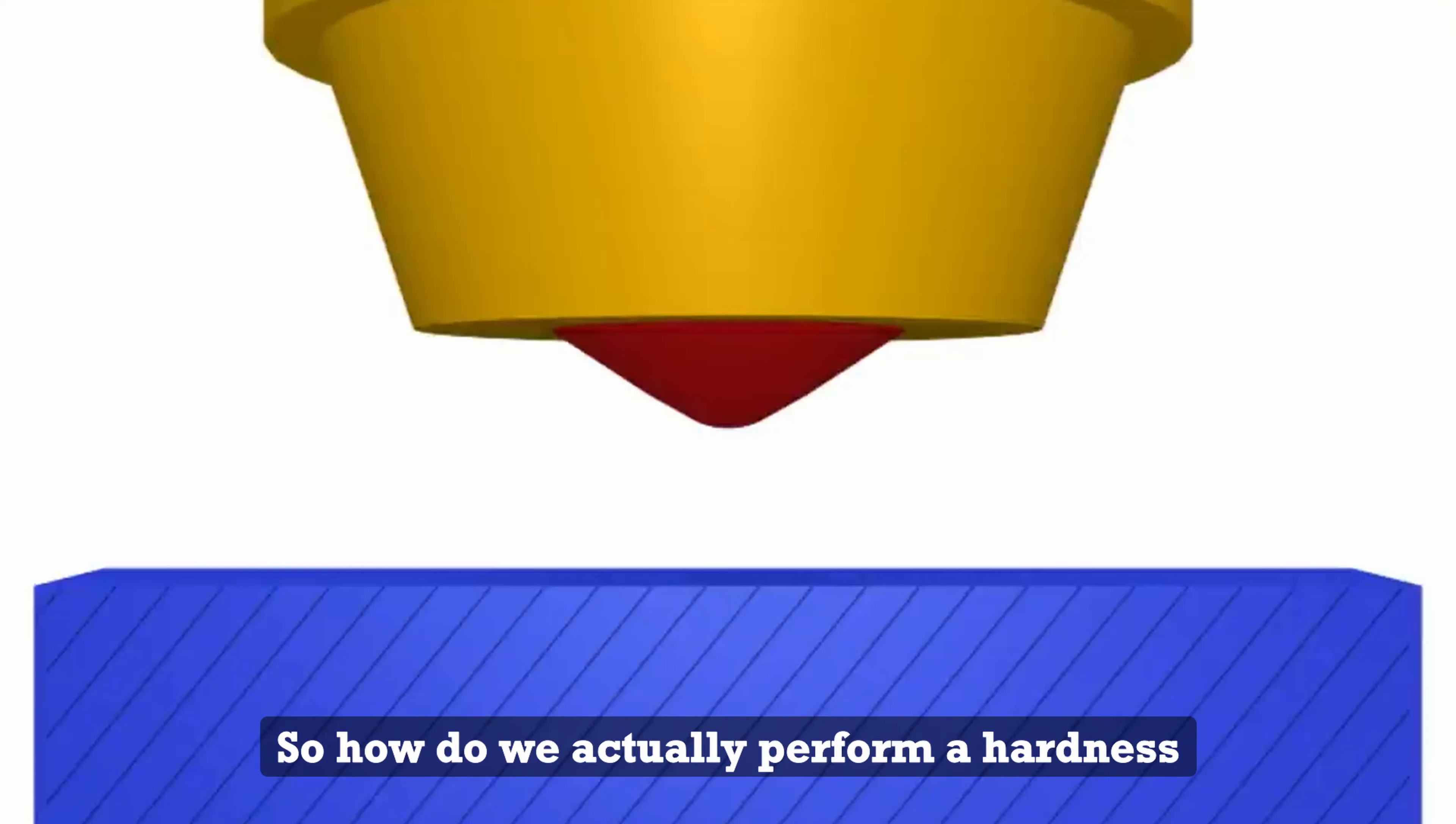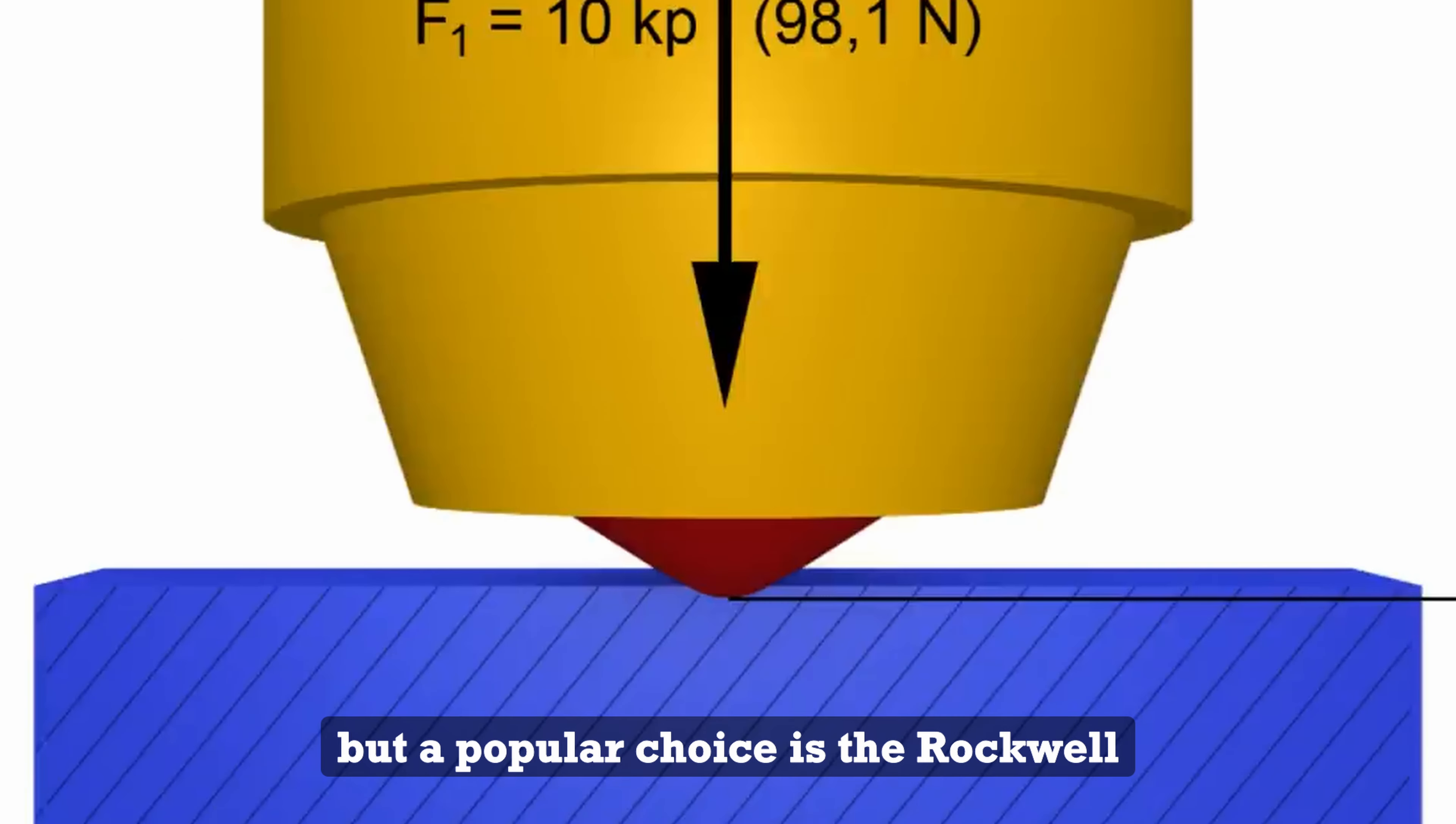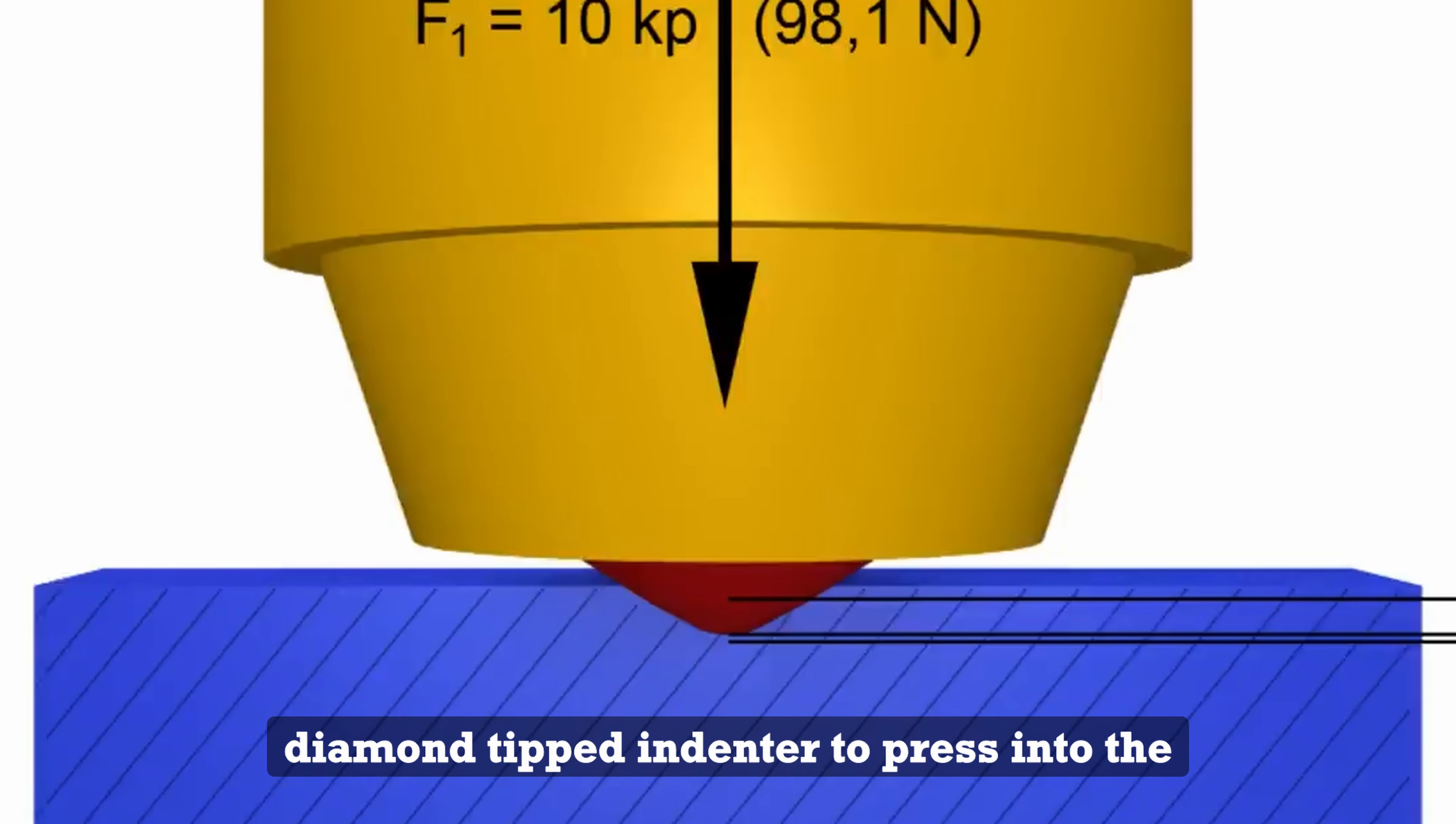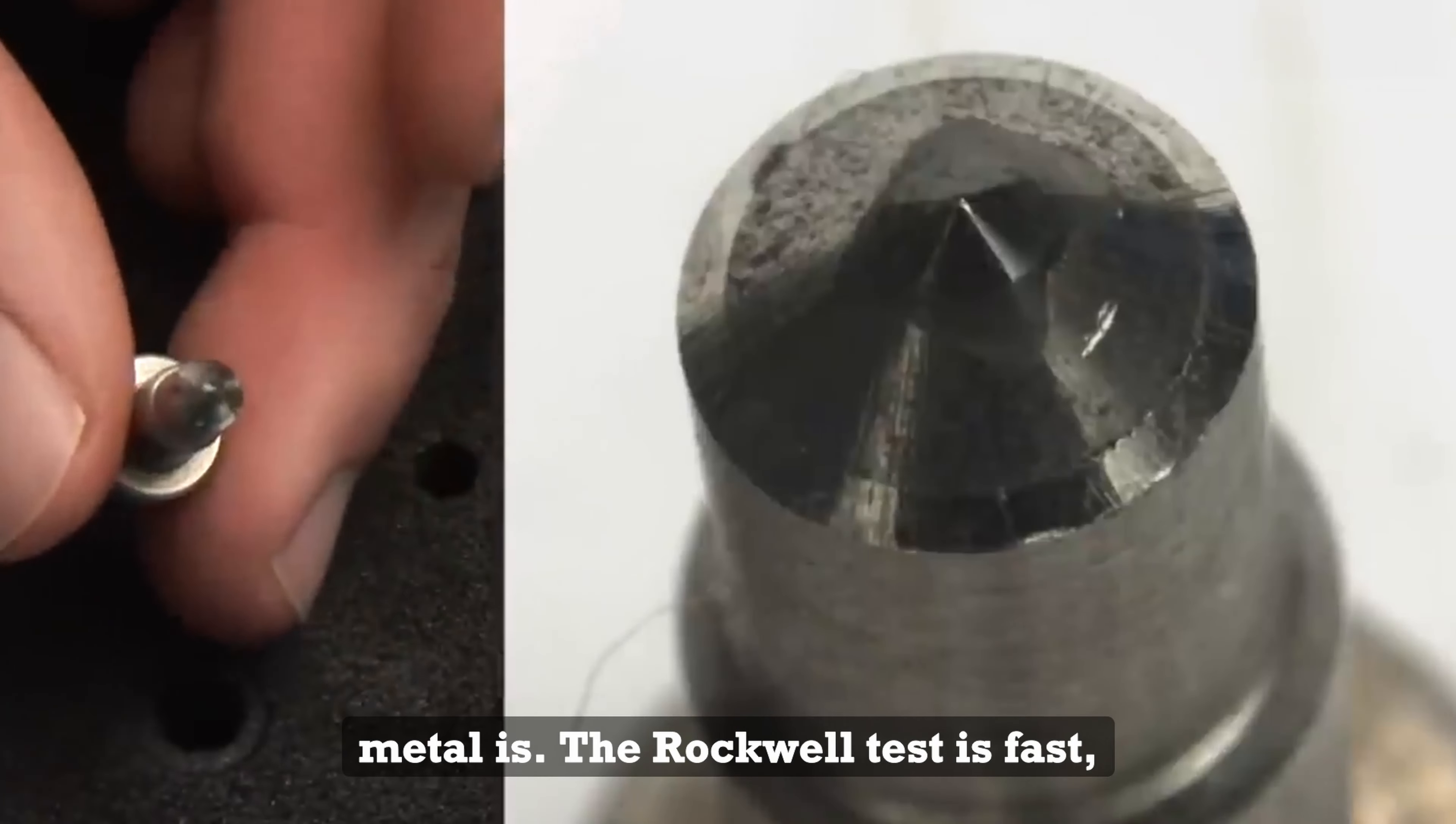So, how do we actually perform a hardness test? There are a few methods, but a popular choice is the Rockwell hardness test. This test uses a diamond-tipped indenter to press into the metal with a controlled force. The depth of the indentation tells us how hard the metal is.